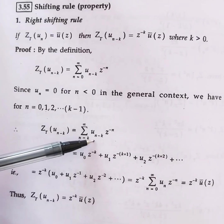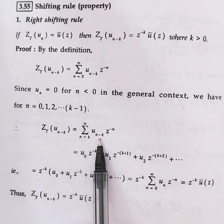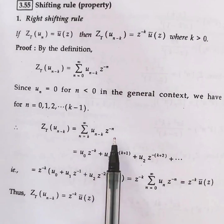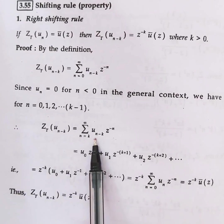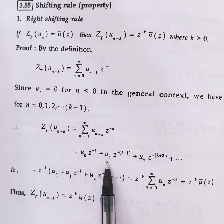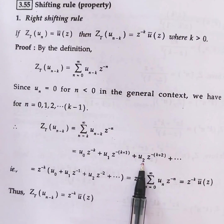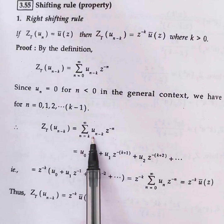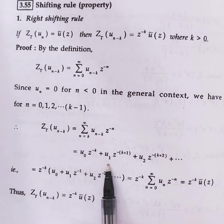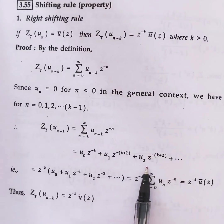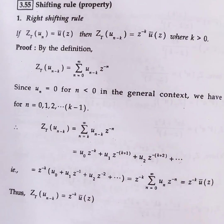From k to infinity, n is greater than 0 so we get some value. Expanding the summation: substitute n=k to get u(0)·z^(-k); substitute n=k+1 to get u(1)·z^(-(k+1)); substitute n=k+2 to get u(2)·z^(-(k+2)), and so on. So the summation is u(0)·z^(-k) + u(1)·z^(-(k+1)) + u(2)·z^(-(k+2)) + ...